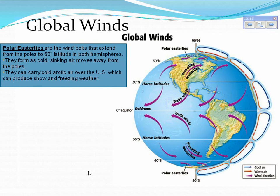Polar easterlies are winds in belts that extend from the poles to 60 degrees latitude in both hemispheres. They form as cold sinking air moves away from the poles. They can carry cold arctic air over the U.S., which can produce snow and freezing weather.